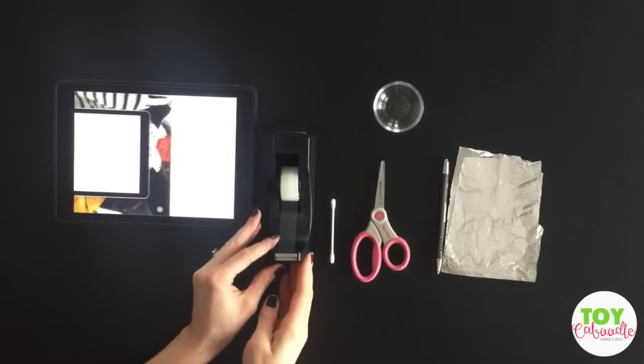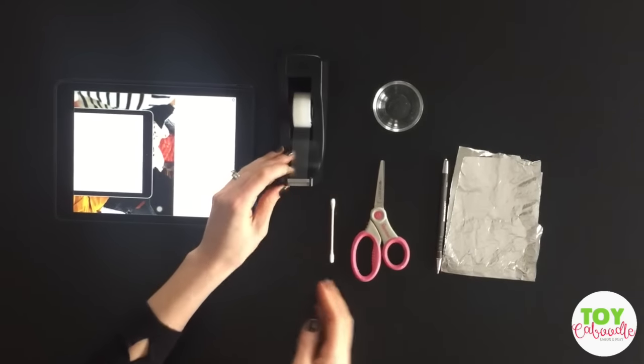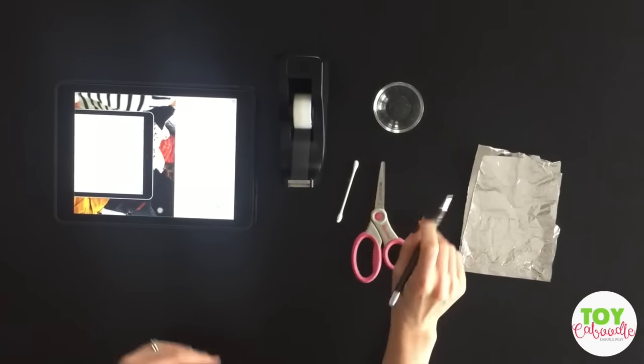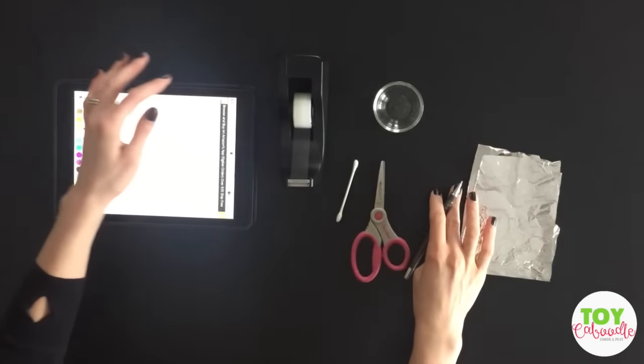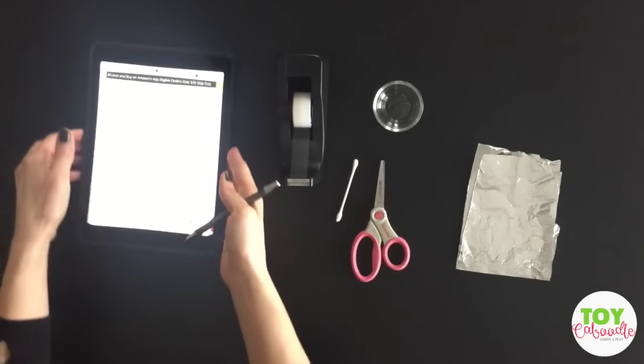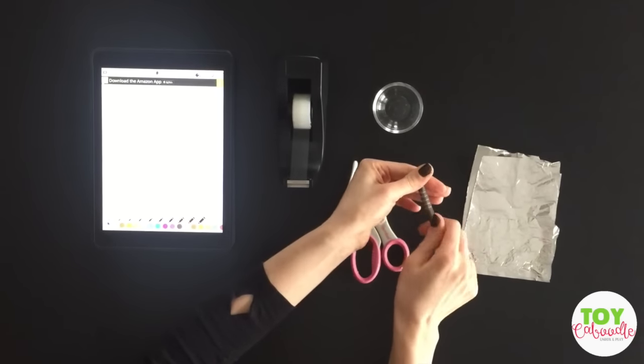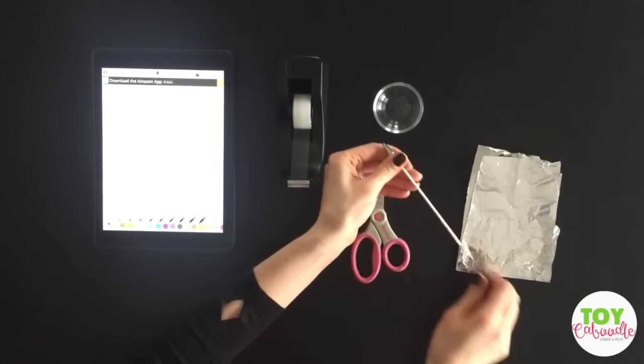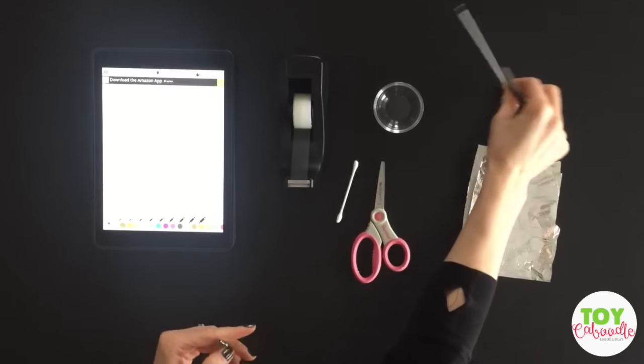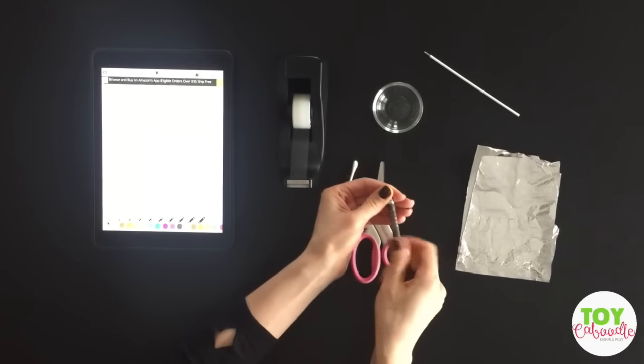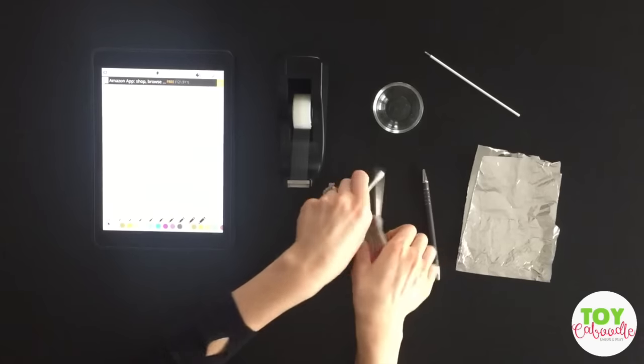So all you pretty much need is a q-tip, some aluminum foil, and a pen. I just have my drawing board here. So all you need to do is take out the ink part out of your pen so it's nice and hollow, then screw that back on.